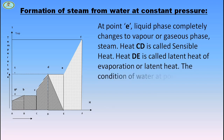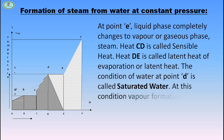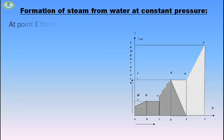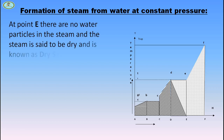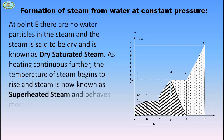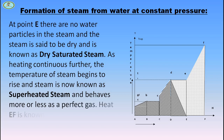The condition of water at point D is called saturated water. At this condition, vapor formation starts on minor addition of heat, and on removal of heat, formation of water particles starts. At point E, there are no water particles in the steam and the steam is said to be dry — known as dry saturated steam. As heating continues further, the temperature of steam begins to rise and the steam is known as superheated steam, behaving more or less as a perfect gas. Heat from E to F is known as superheat.